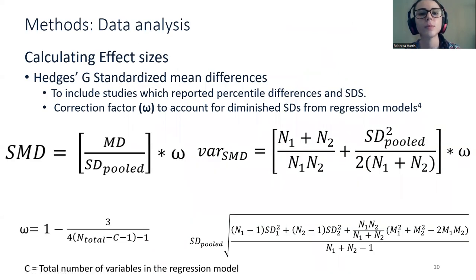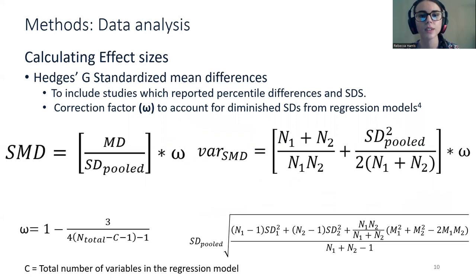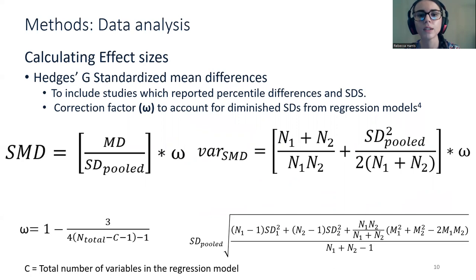For our analysis, we chose to pool Hedge's G standardised mean differences to enable us to pool effect sizes expressed as percentile scores and standard deviation scores together with those expressed in millimetres of mercury. Because effect sizes were adjusted for confounders using multiple regression models, we also included a correction factor when calculating these, to account for the fact that variability around the mean difference decreases as the number of variables in the regression model increases.